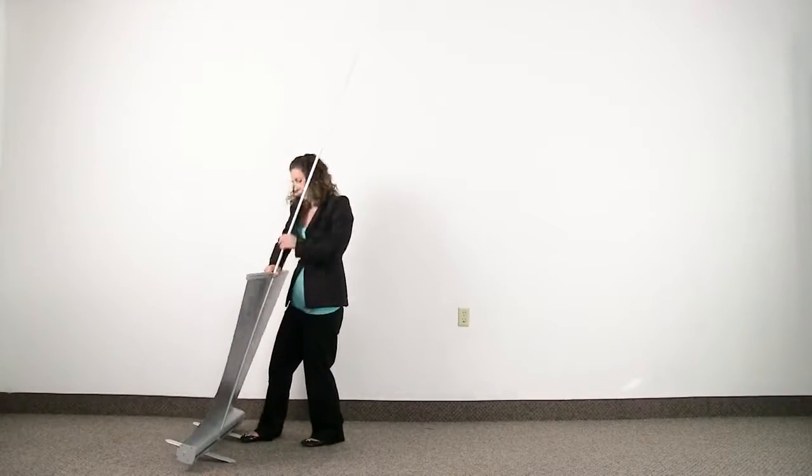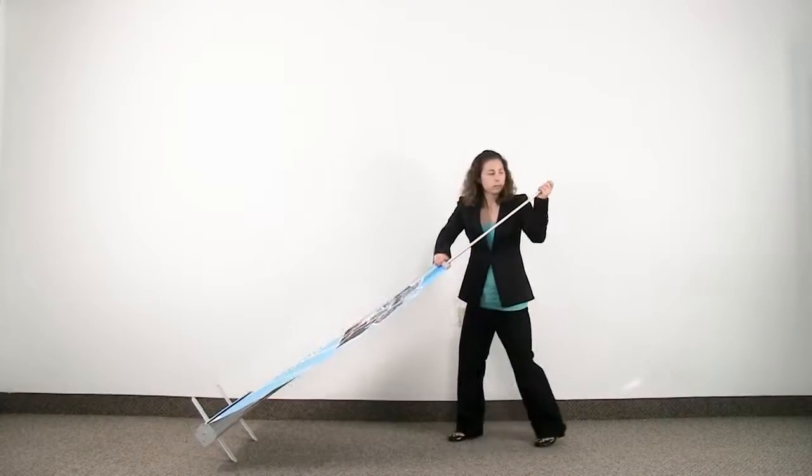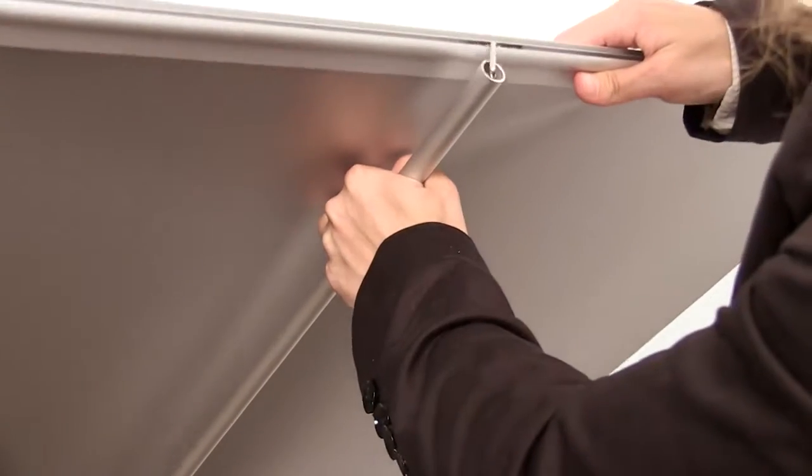Grab the snap rail of the banner and gently pull up as you lean the base back. Place the hook into the top of the banner pole.